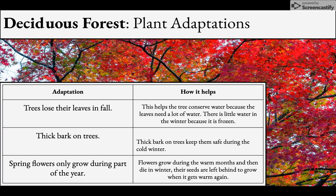For plant adaptations: trees losing their leaves in fall helps them conserve water, since there's not much available in winter. They lose their leaves so they don't need as much water, then grow them back in spring. Thick bark on trees protects them and keeps them safe during the cold winter. Spring flowers only grow during part of the year — they pop up in spring and die in fall and winter, but seeds are left behind to grow again when it gets warm.